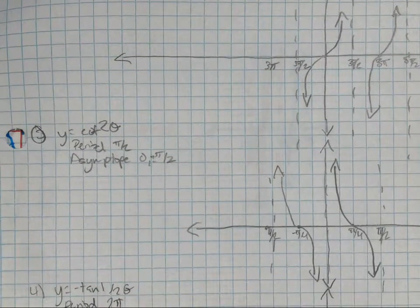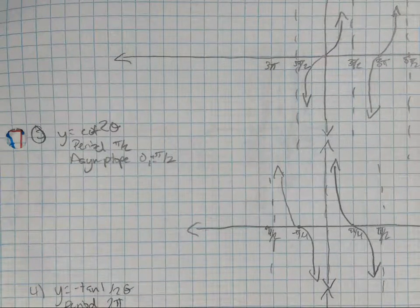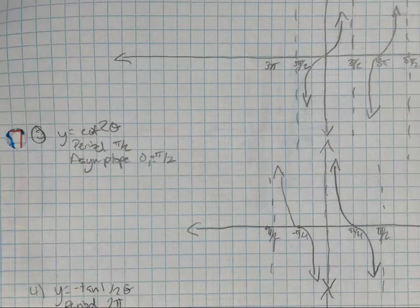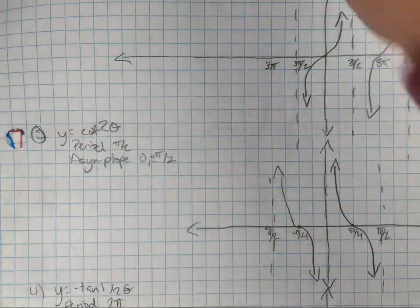Number three: cotangent of two-theta. Period is pi over two. Very good. For cotangent, asymptotes are at zero and plus or minus pi over two. Very good, Parker. We've got enough asymptotes — now we need to find the middle point; you divide by two. Great job.